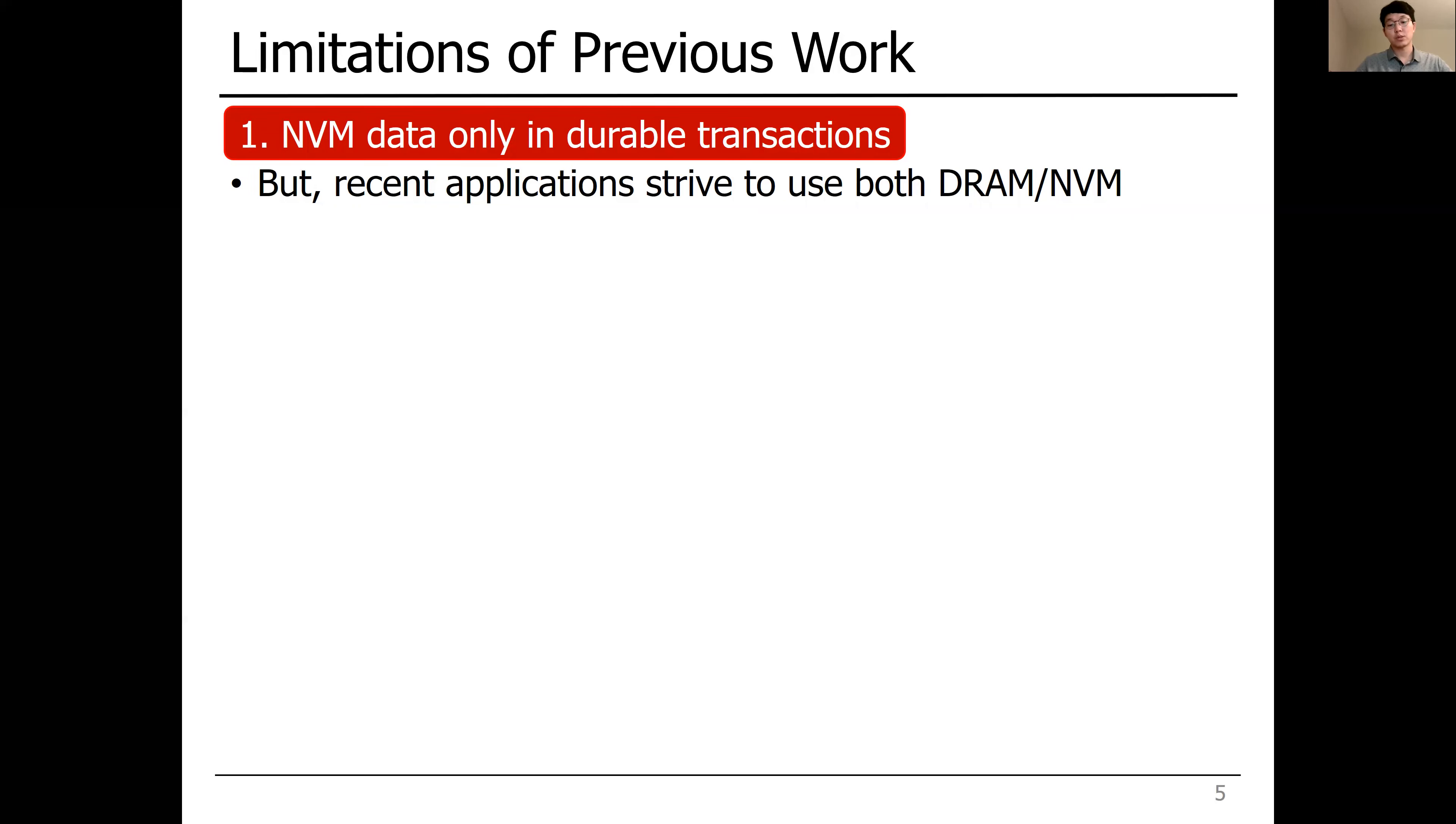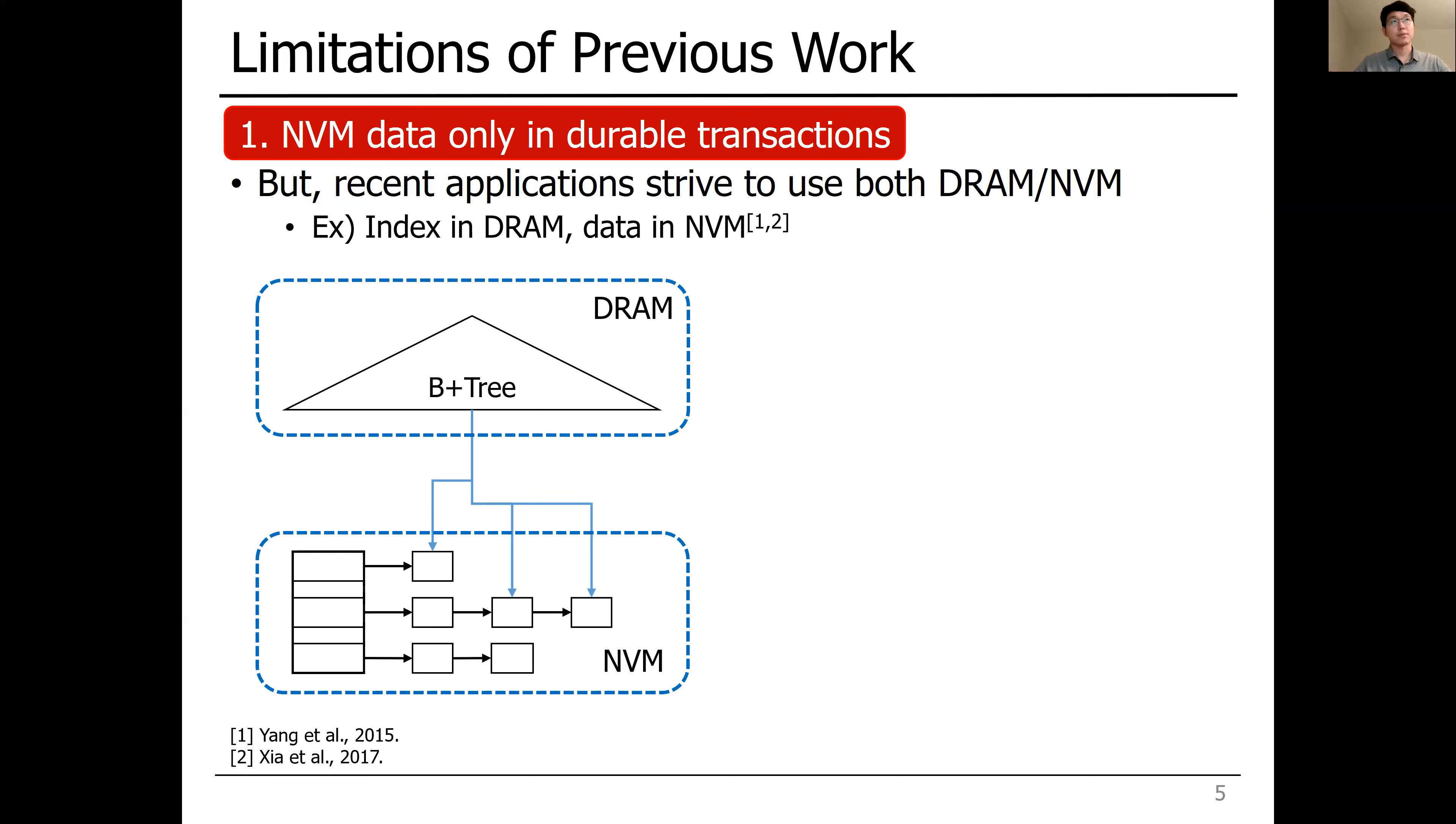According to trends in persistent memory programming, they pursue to use both DRAM and NVM data structures in a transaction. For example, recent studies for persistent key-value stores place their index structure in DRAM while storing data in NVM. This design accelerates search operations with the fast DRAM index structure.